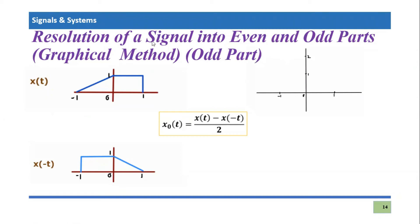At t = -1, x(t) is zero and x(-t) is plus one, so zero minus one would become minus one. At t = 0, x(t) is one and x(-t) is also one, so one minus one would become simply zero. This graph is of x(t) minus x(-t).